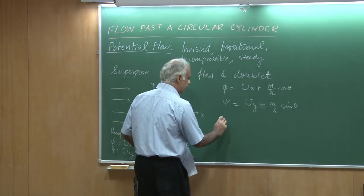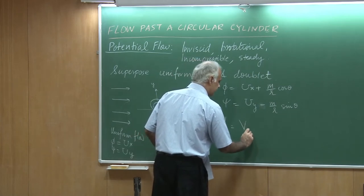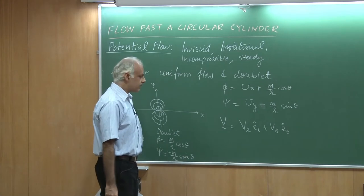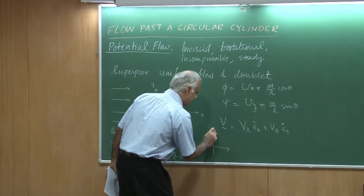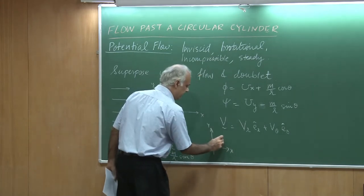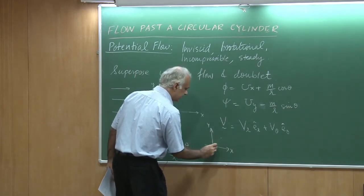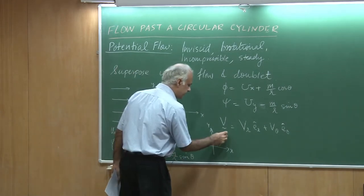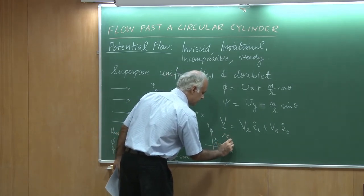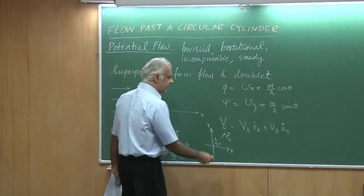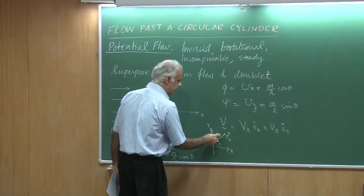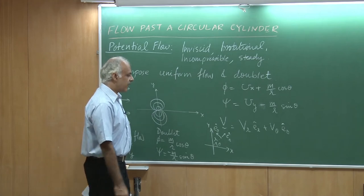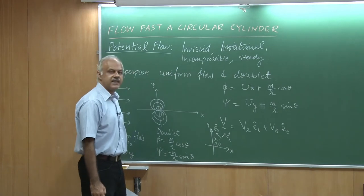I would like to get the two components of velocities. I could write the velocity vector as v_r times e_r plus v_theta times e_theta. Our convention is that if this is the x and y axis and I look at any point, then e_r is radially outward and e_theta is a unit vector perpendicular to it. v_r and v_theta are the velocity components in those directions. I could get the velocity vector in polar coordinates or also in Cartesian coordinates as v_x and v_y.